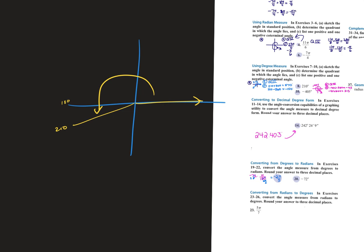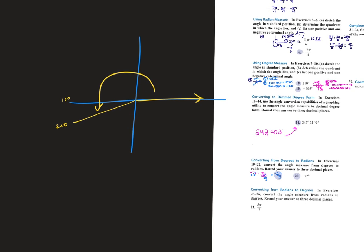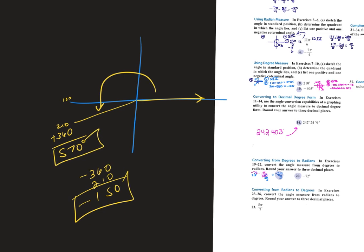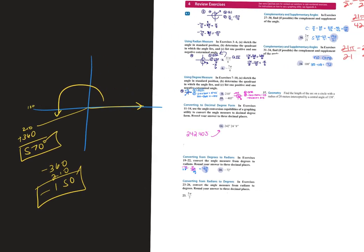And then to find the positive and negative coterminals, we're either adding 360, so it'd be 570, or we're subtracting 360, and it's negative 150. So one positive, one negative. Other questions from the first page?